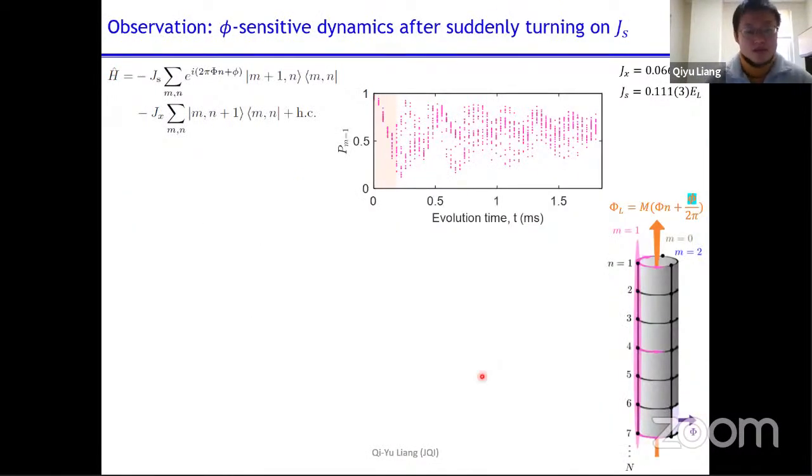So here is our experimental sequence. We start the atoms from M equals 1 site. We adiabatically load them to a 1D optical lattice. The depth is 5 recoil and the resulting hopping term is 0.066 recoil. At time t equals zero, we suddenly switch on JS and let this atom evolve for a certain time t. After that, we suddenly shut off the dipole trap, the optical lattice, and the Raman coupling, and keep track of how many atoms are in each of these M sites.